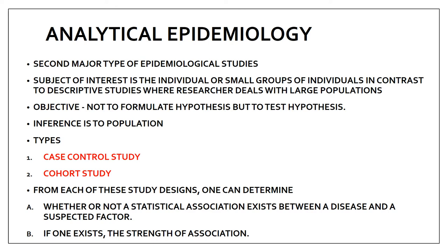In descriptive epidemiology, the last step was to formulate a hypothesis — a supposition. For example, we suppose that smoking can cause oral cancer, but we don't know whether it's true or false. In analytical epidemiology, we test that hypothesis to determine whether the statement is right or wrong. The two types of analytical studies are case-control and cohort study, and from each design one can determine whether a statistical association exists between a disease and a suspected factor.